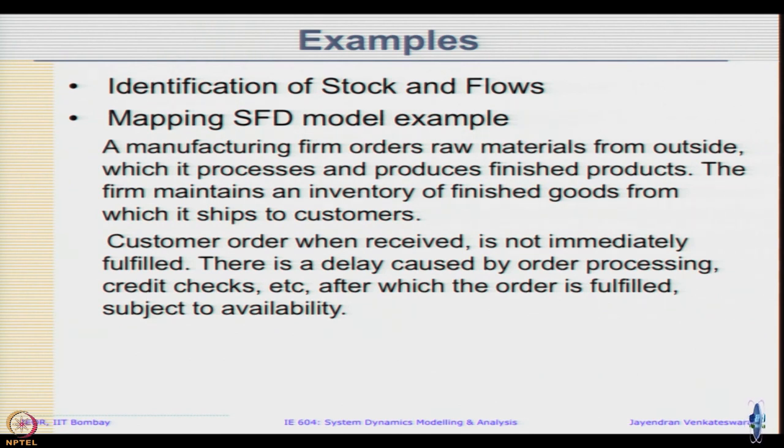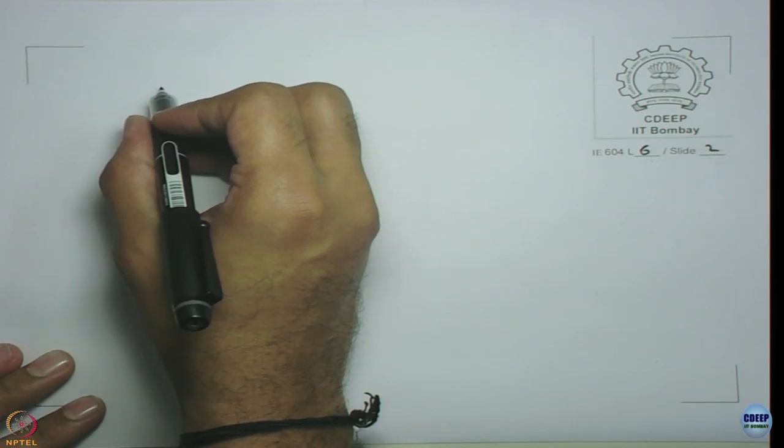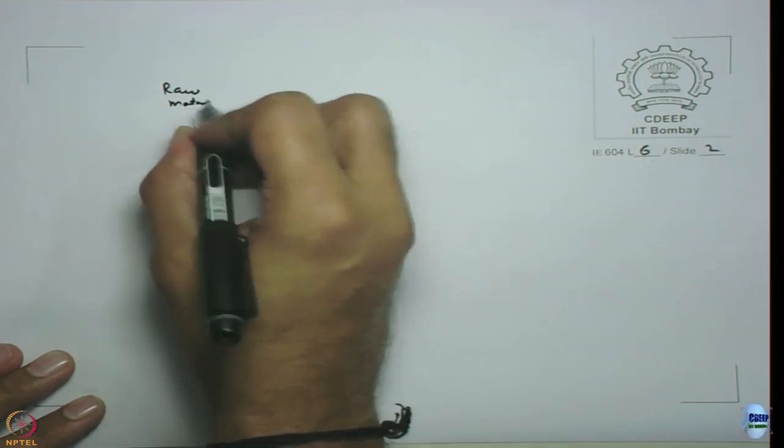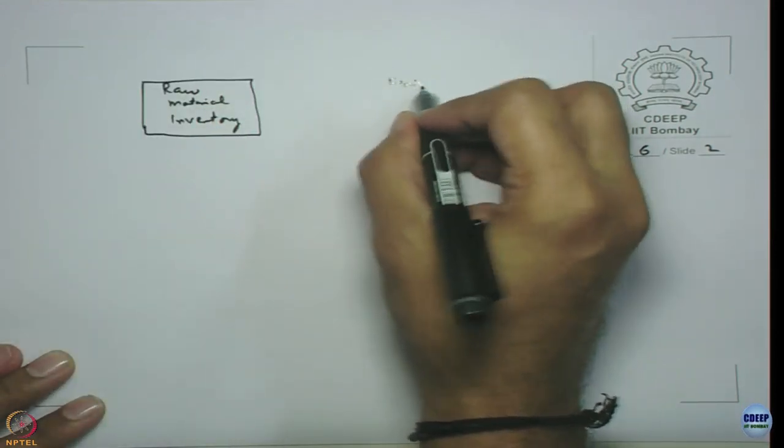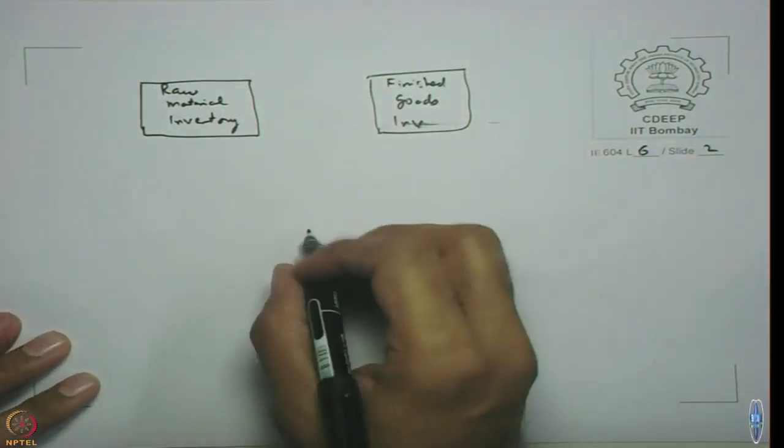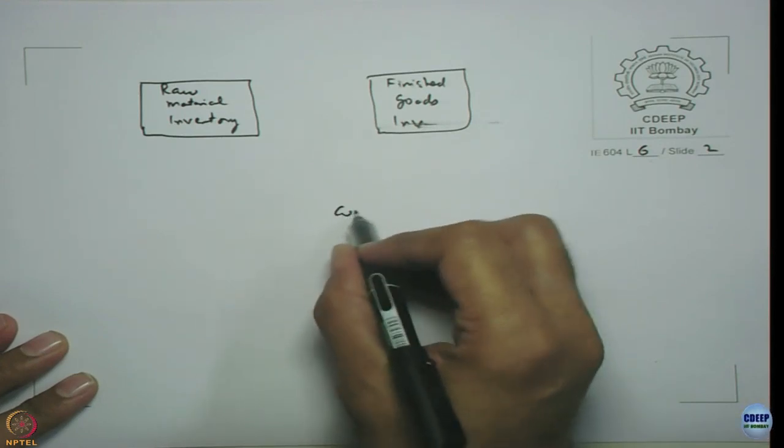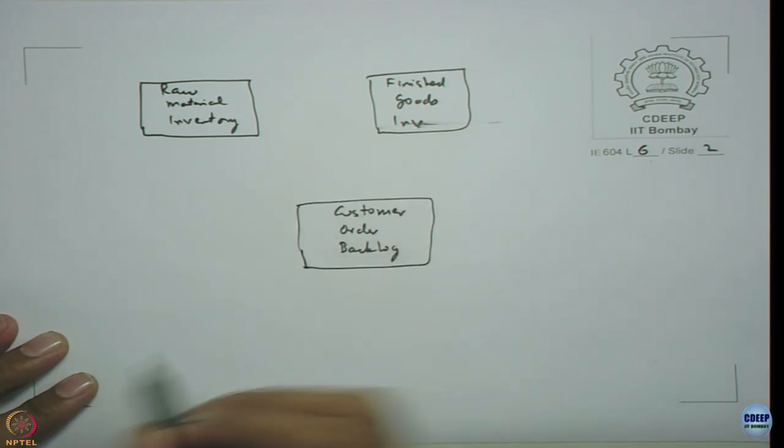This is the very brief description. What all could be the stocks in this model in this scenario? The example is quite easy to remember. All we have is a company gets raw materials, then it produces and makes finished products and when customer makes an order, they keep it in backlog while they are doing all the various checks and then once it is shipped. You identified three stocks: raw material inventory, finished goods inventory, and customer order backlog.